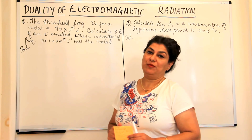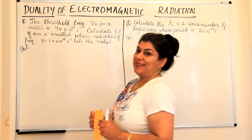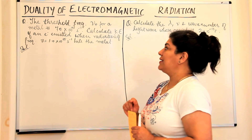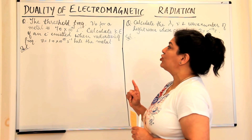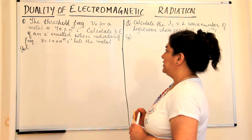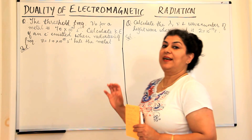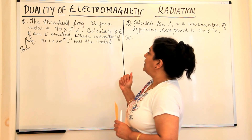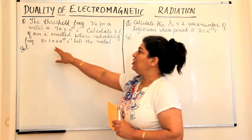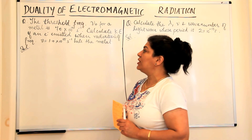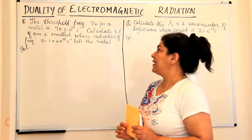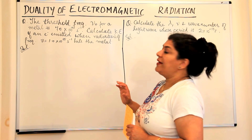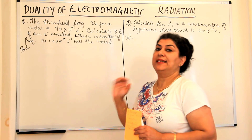I've chosen two problems today. The first one: the threshold frequency ν₀ for a metal is 7 × 10¹⁴ per second. You have to calculate the kinetic energy of an electron emitted when the radiation of frequency ν = 1 × 10¹⁵ per second hits the metal. We are expected to calculate the kinetic energy.